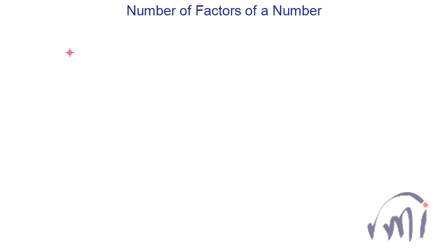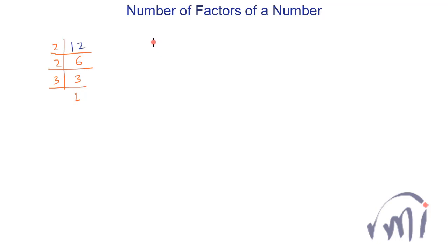So suppose if we want to find how many factors does the number 12 have. First we will do the prime factorization. It's an even number so it will be divisible by 2, then this 6 will again be divisible by 2, and this 3 will be divisible by 3 one time. So 12 written as a product of its prime factors is 2 × 2 × 3, or 2² × 3.